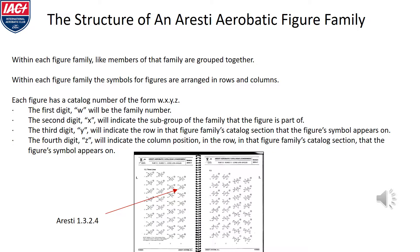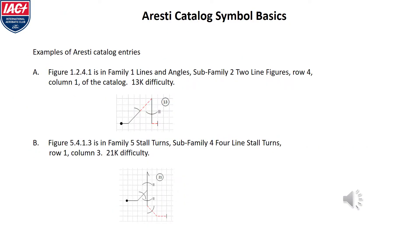Within each figure family in the Aresti catalog, like members of that family are grouped together. Within each figure family, the symbols for figures are arranged in rows and columns on the pages. Each figure has a catalog number in the form of w.x.y.z, where w will be the family number, x will be the subgroup of the family that figure is part of, y will indicate the row on the page, and z will indicate the column on the page. Here are two examples of Aresti catalog entries. Example A is figure 1.2.4.1: family 1, lines and angles, subfamily 2, two-line figures, row 4, column 1. Example B is figure 5.4.1.3: family 5, stall turns, subfamily 4, four-line stall turns, row 1, column 3.